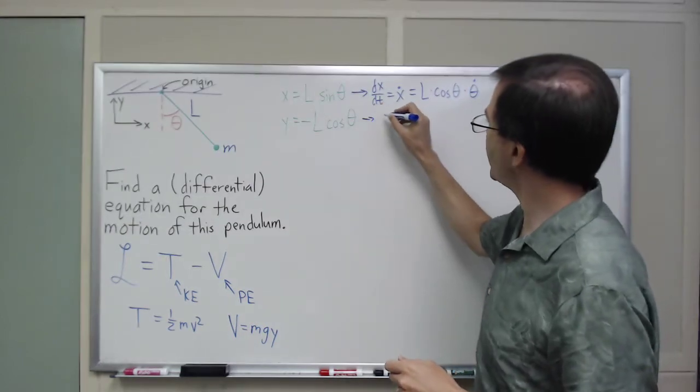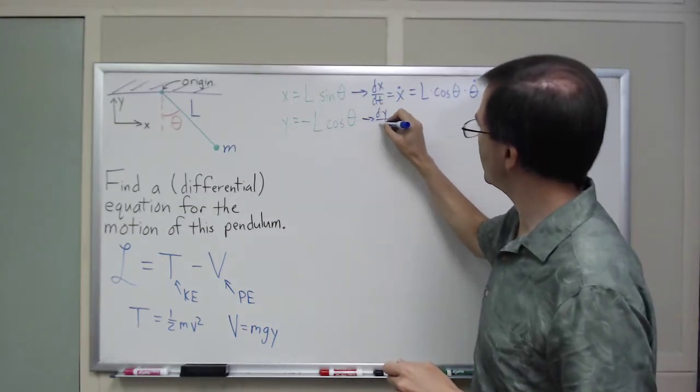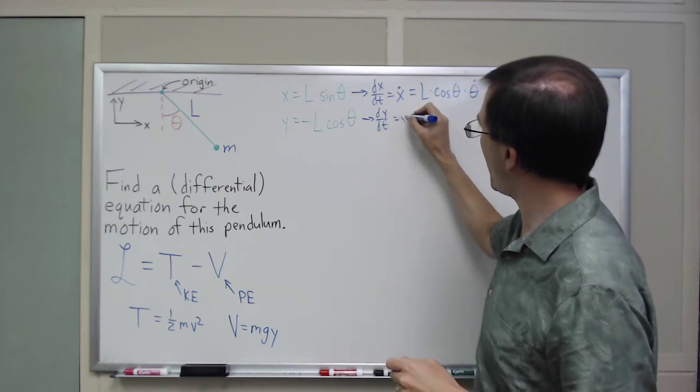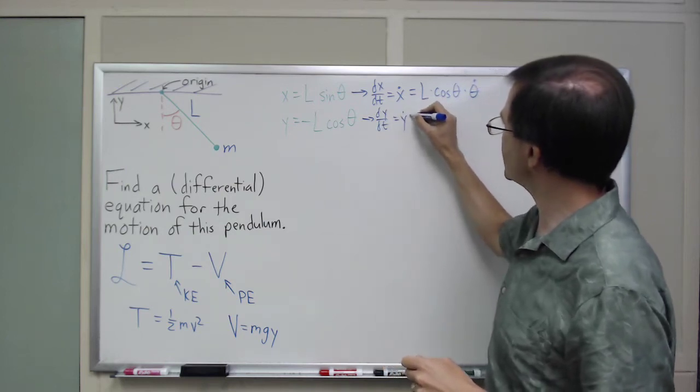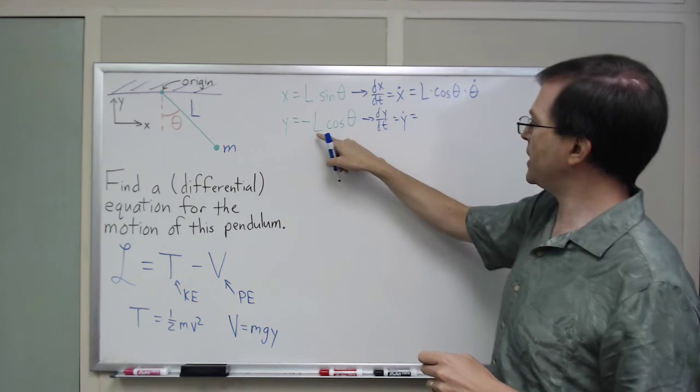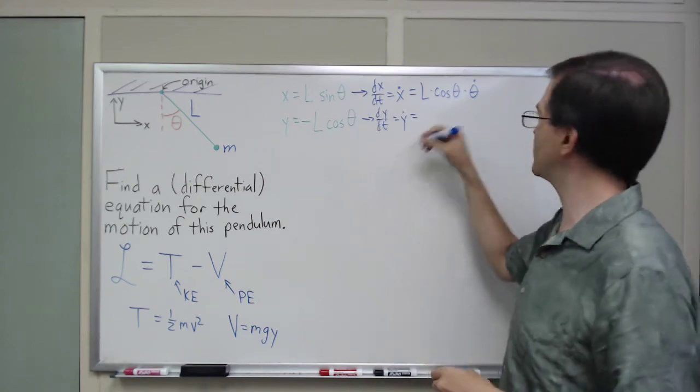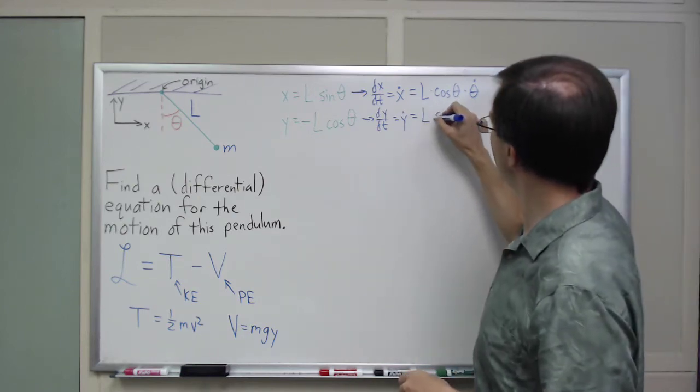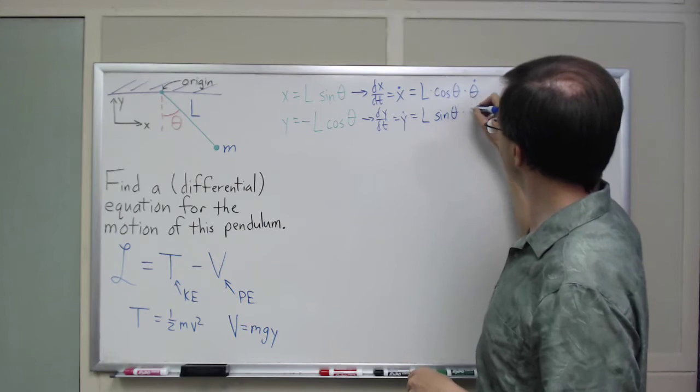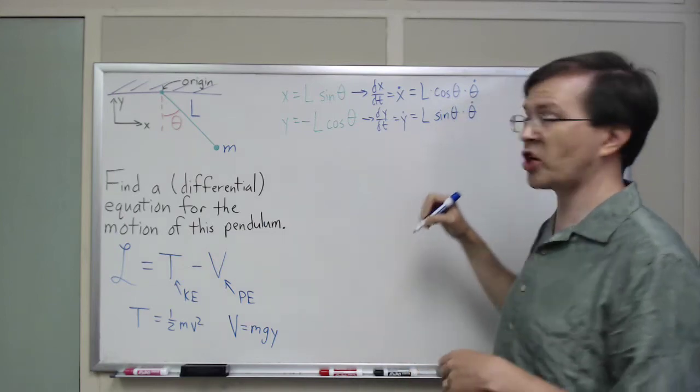y dot. And this one, y dot, so dy dt is y dot, and that's equal to, let's see, negative cosine, derivative of that is positive sine. So, L sine theta times theta dot. Again, chain rule going on there.